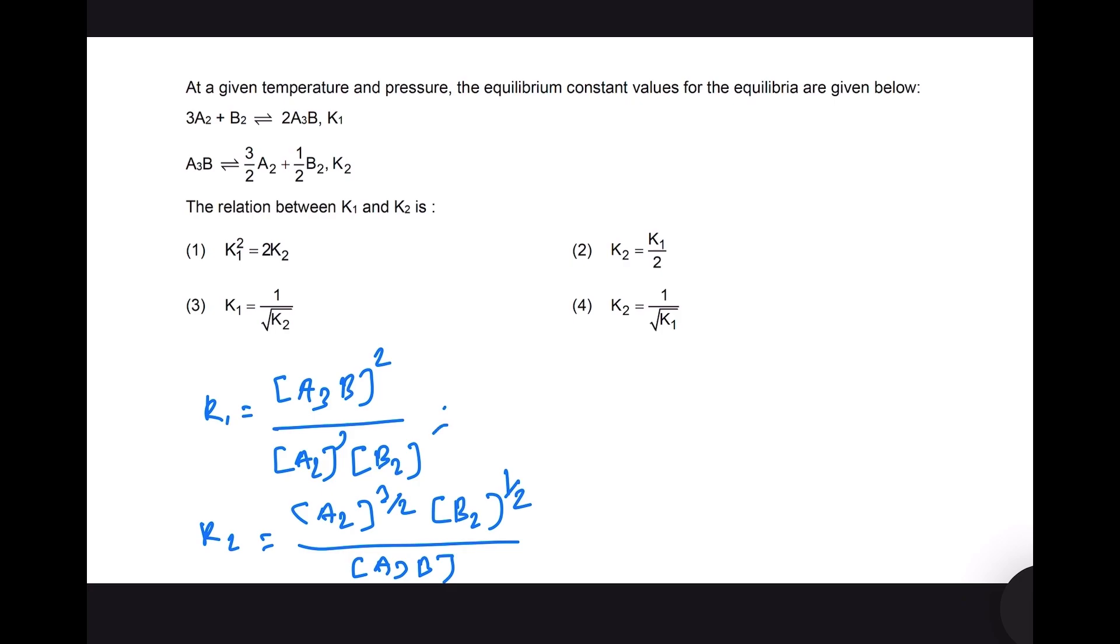Now let us assume that k prime equals 1 by k1. 1 by k1 will be a2 to the power 3, b2 divided by a3b to the power 2.